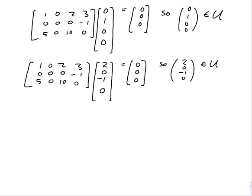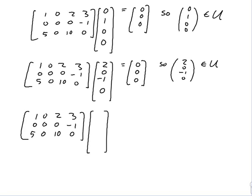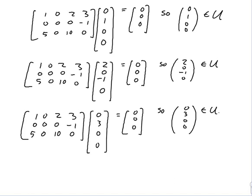For the fourth vector: since (0, 1, 0, 0) is in U, three times that — (0, 3, 0, 0) — is also in U. I could also produce more vectors by taking multiples of any vector I already have, or by row reducing the equation to find all solutions. But I only needed four vectors, so the question is done.